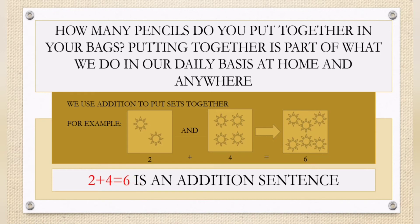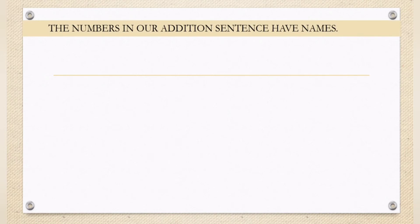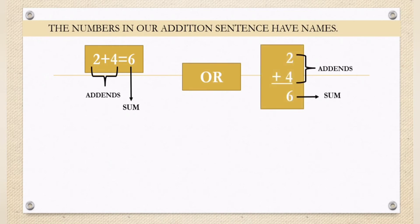Remember, 2 plus 4 equals 6 is an addition sentence. The numbers in our addition sentence have names. It can be positioned either horizontal or vertical. Here, we have 2 plus 4 — their name is called addends, while the result, 6, is called sum. The same here: 2 and 4 are called addends, while 6 is called sum.